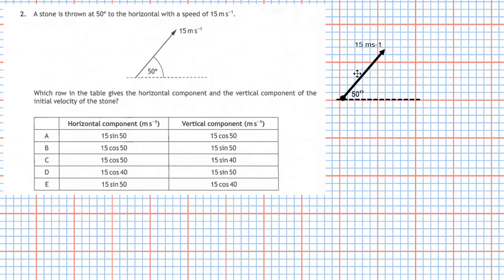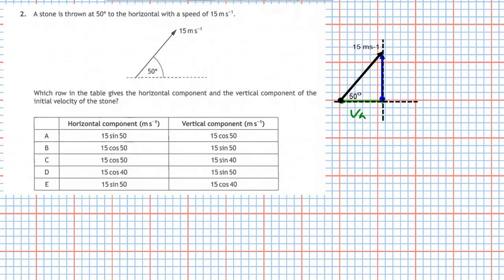Looking at the diagram, we have a velocity vector of 15 meters per second at an angle of 50 degrees to the horizontal. Like all vectors, we can split it into a horizontal component and a vertical component. Drawing a dashed line to form a triangle around the vector, the horizontal component vh lies along the horizontal and the vertical component vv lies upward.